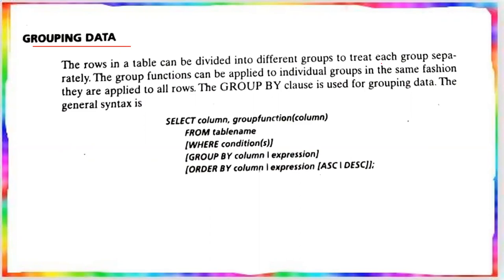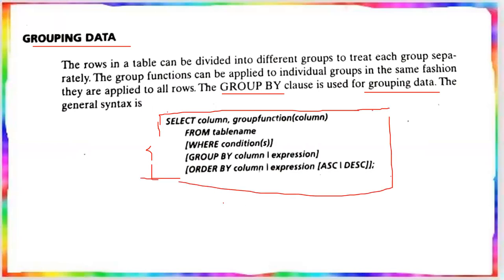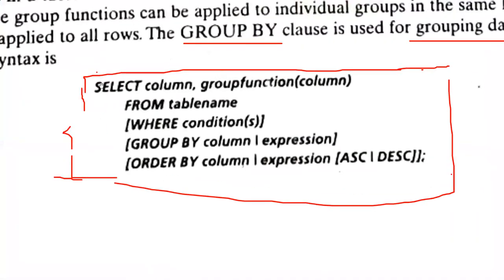The rows in a table can be divided into different groups, and the different groups will be treated separately. When you apply a group function to a single group, we use a clause called GROUP BY. Grouping data uses the GROUP BY clause. The syntax for grouping data includes the SELECT clause with column name and group function — sum, average, max, min, count — FROM table name, with an optional WHERE condition, and GROUP BY column or expression.